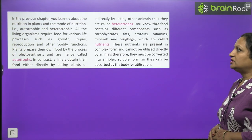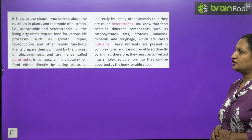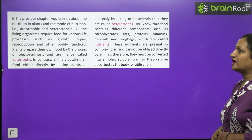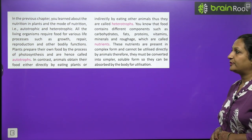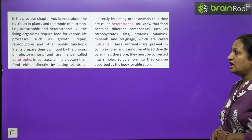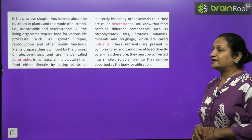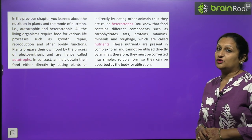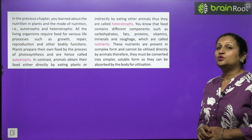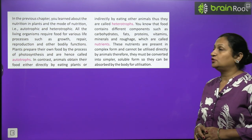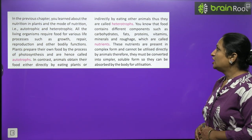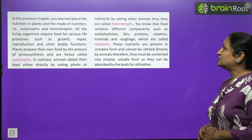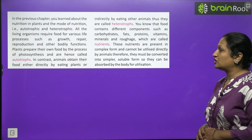In the previous chapter, you learnt about nutrition in plants and modes of nutrition, i.e., autotrophic and heterotrophic. All living organisms require food for various processes such as growth, repair, reproduction and other bodily functions. Plants prepare their own food by the process of photosynthesis and hence are called autotrophs. Animals cannot make their own food — they depend on others — and hence are called heterotrophs. Food contains different components such as carbohydrates, fats, proteins, vitamins, minerals and roughage, which are called nutrients.